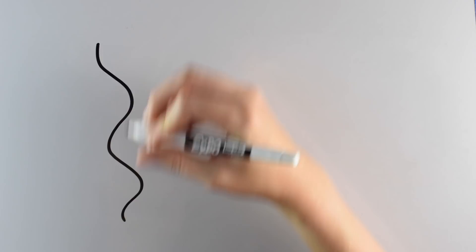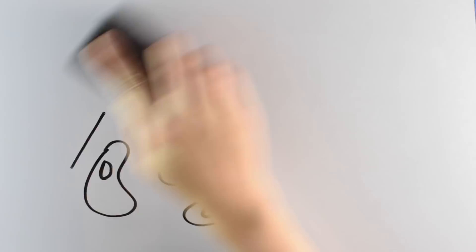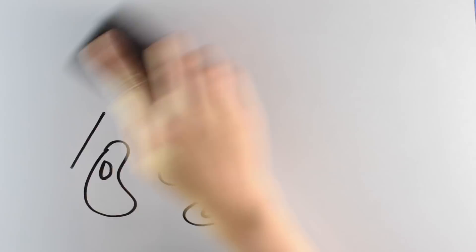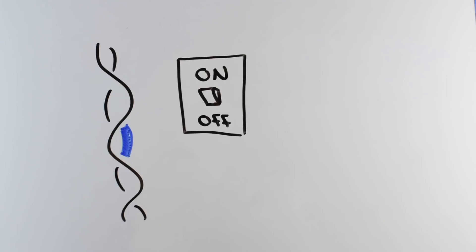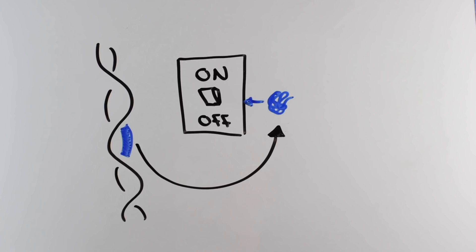From this protein cycling discovery, they came up with the idea that perhaps the period protein turned off its own gene. One of the easiest ways to turn on and off a gene is to have the protein that gene makes also be the switchmaster. The researchers thought that the period protein turned off its own production, which would lead to a cycle of period amounts.